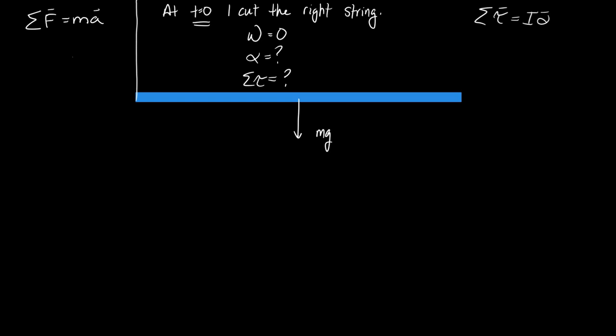In this problem it's clear where the pivot point should be placed. This has a fixed, identifiable pivot point given to us — it's not free to rotate about its center of mass, it's going to rotate about the remaining string attachment point. There are two forces acting on the meter stick: weight and tension.